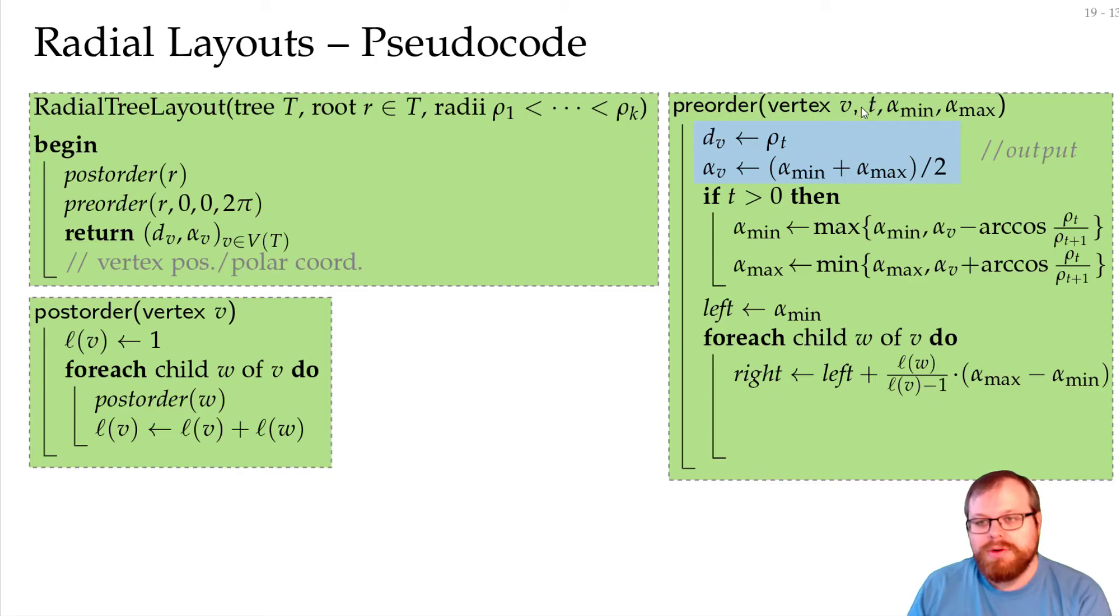So we can recursively call the function with t plus 1 left and right for the child w. And then for the next child we start again where the previous child left. So our new left boundary basically is the right boundary of the old one. And if we do this for all the children then this whole angle range that we used has been partitioned into angle ranges for the children and we are done.